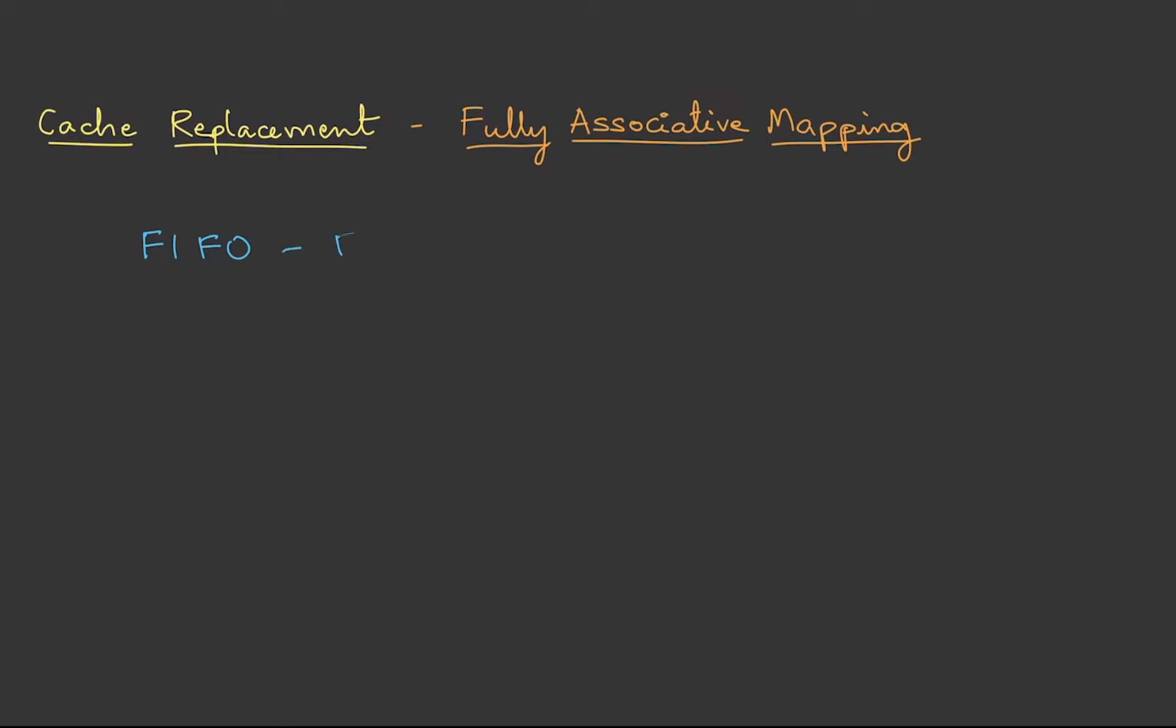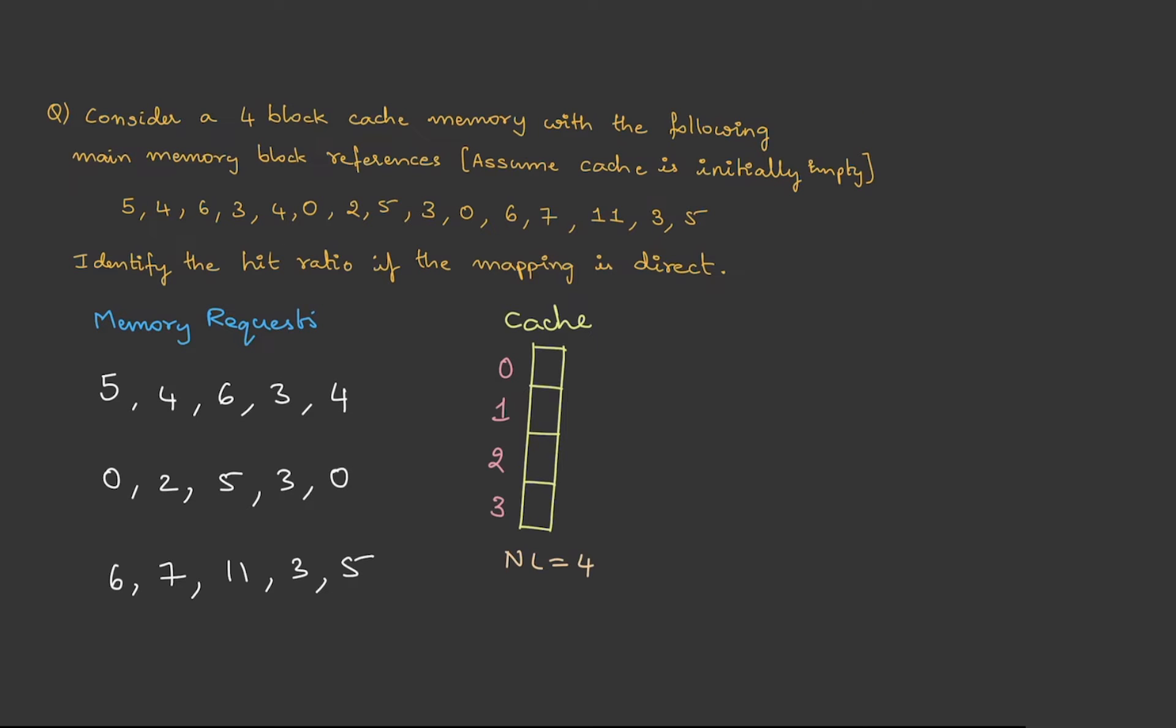Cache replacement in fully associative mapping. First, let's learn FIFO. FIFO stands for first in first out - whichever element entered first has to be removed. To understand this, let's take the previous example.